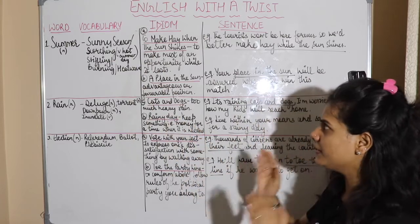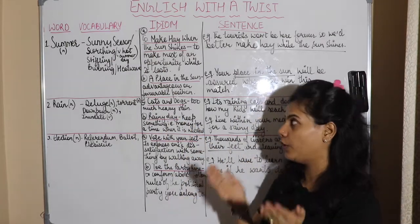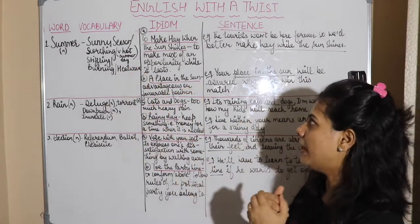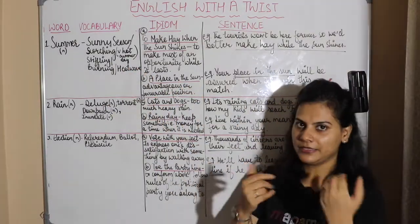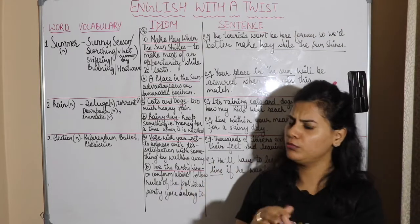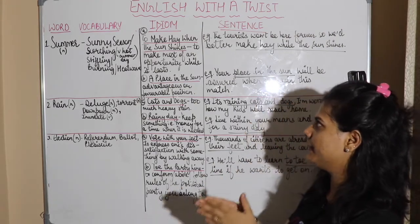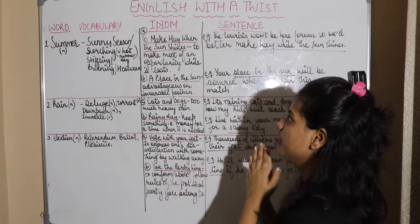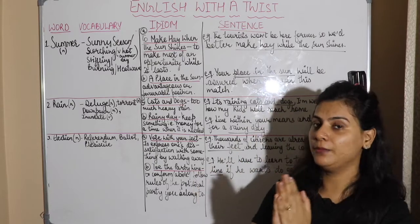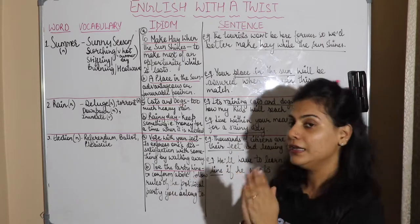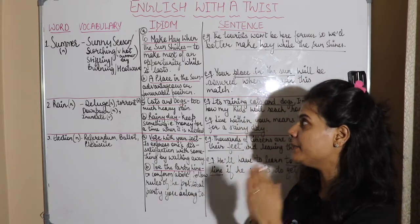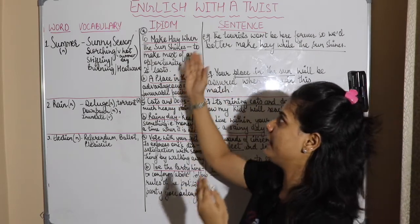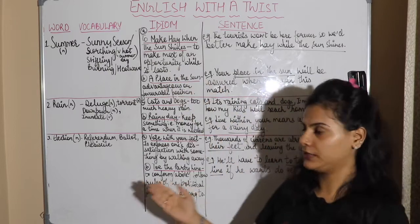Now, what idioms are related to summer? One very commonly used idiom is 'to make hay while the sun shines.' Its meaning is: to make the most of an opportunity while it lasts. If we have an opportunity, we should take maximum advantage of it — that is 'to make hay while the sun shines.'